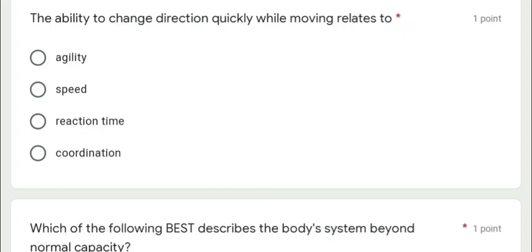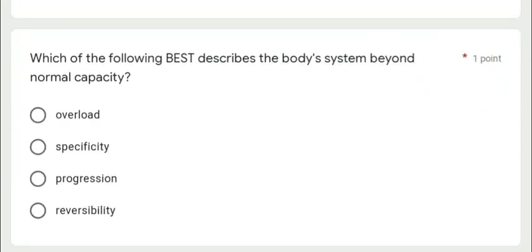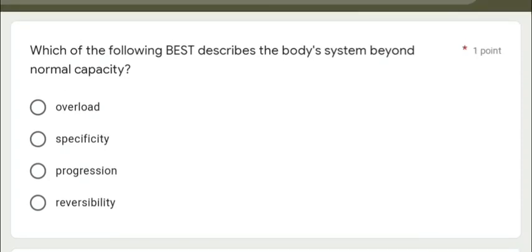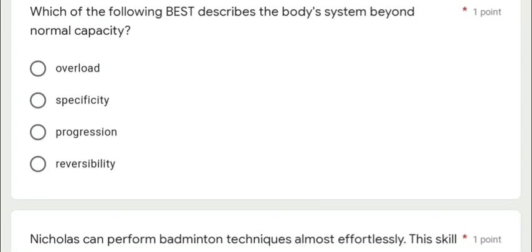Next question: what are following best describes the body system beyond normal capacity? Is it overload, specificity, progression, or reversibility? Overload is the answer.